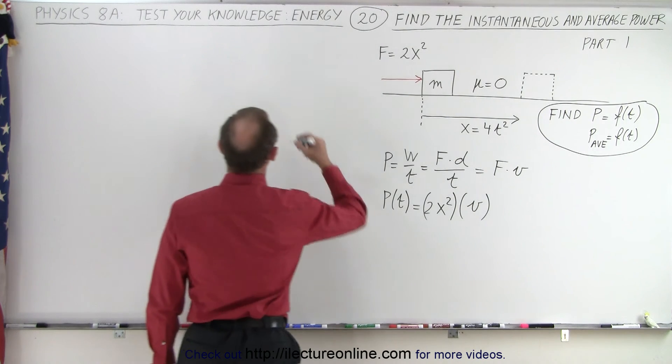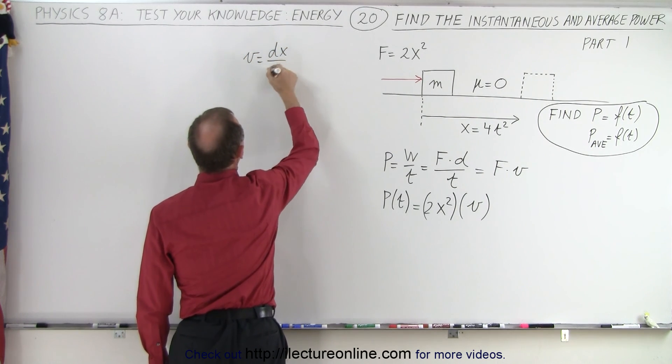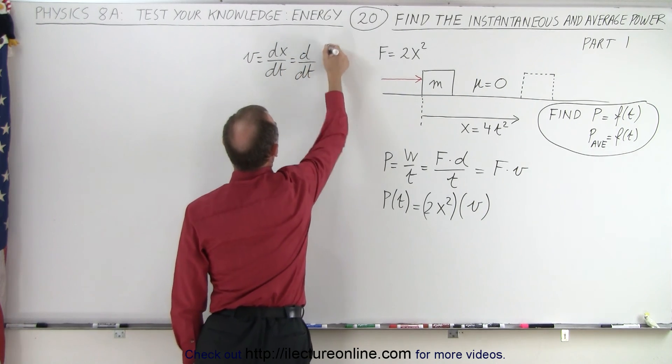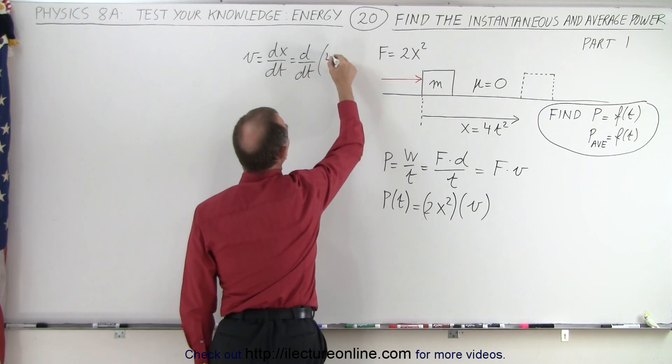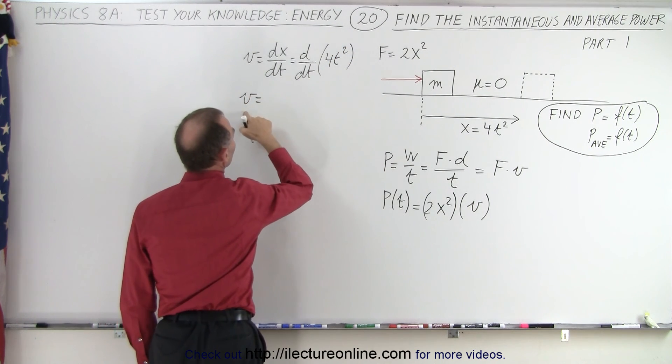So what we can do here is we can say that velocity is equal to the derivative dx/dt. In other words, it's the d/dt of what x is equal to, which is 4t squared. And therefore, we can say that the velocity as a function of time is going to be equal to 8 times t.